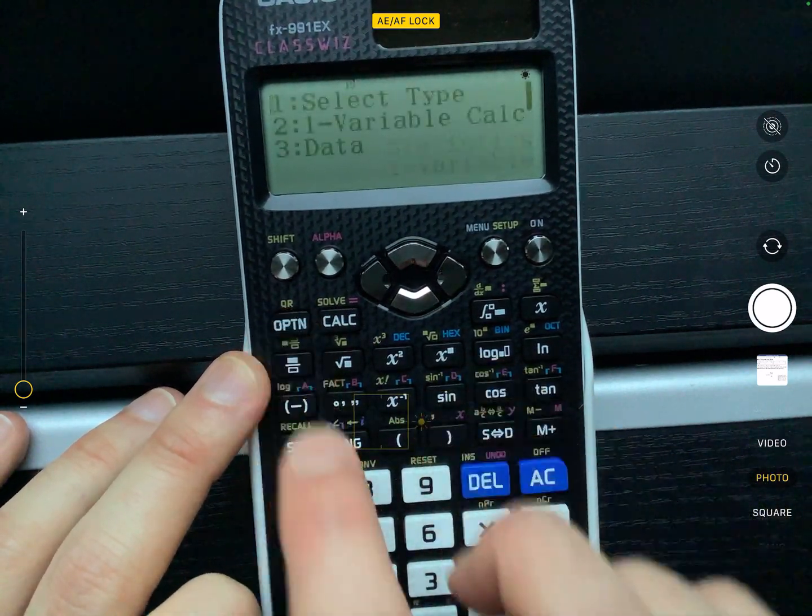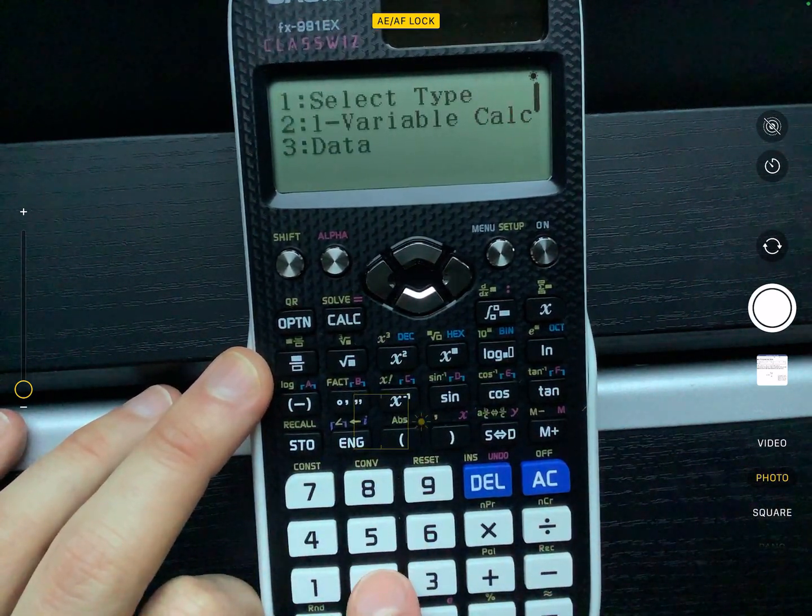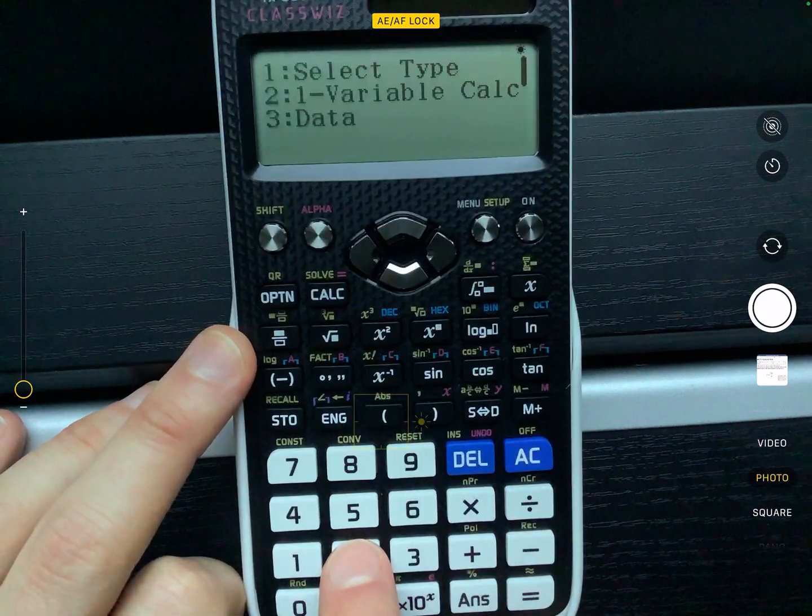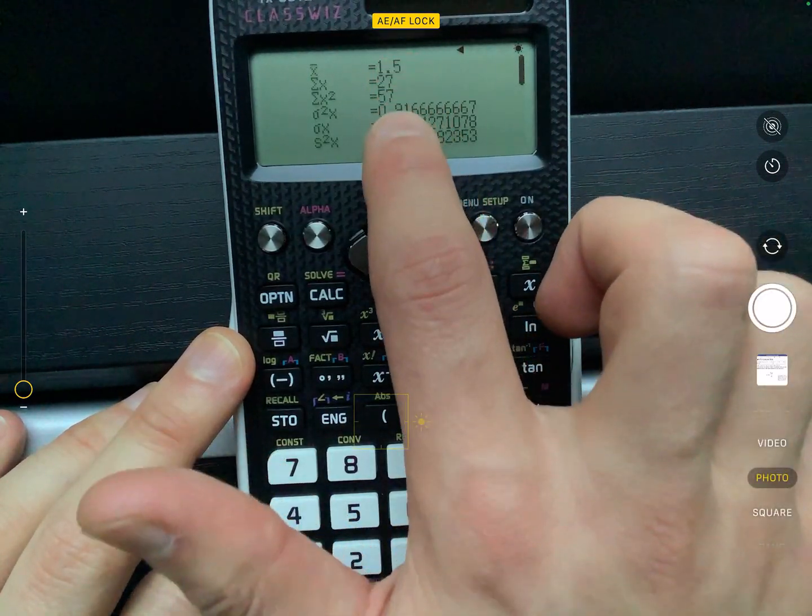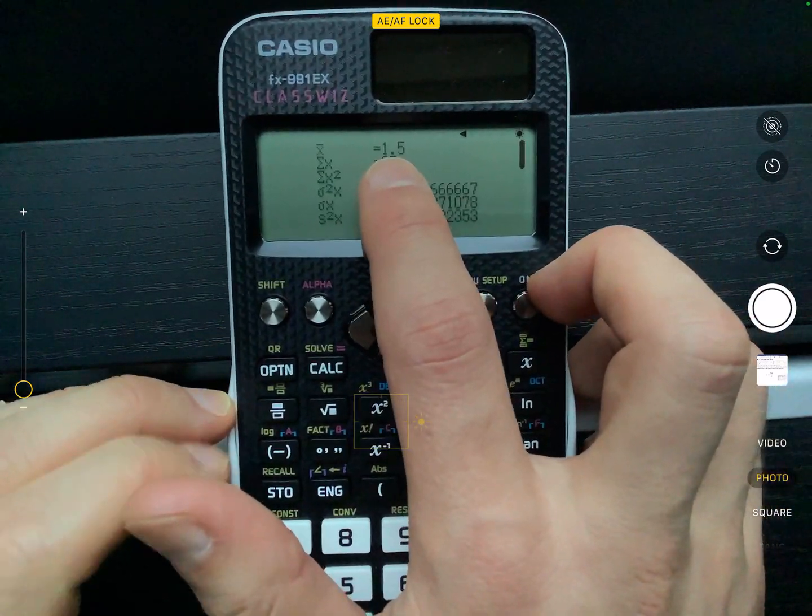Press AC to clear all of this. And remember what you do, you press options. It's a one variable calculating. So I'm going to press number two. And you get all of the different things that you've got here. So they're a little bit small to see, but you can see that the average is 1.5.